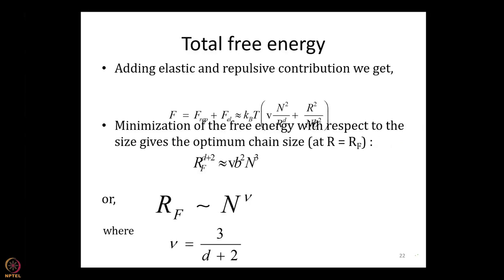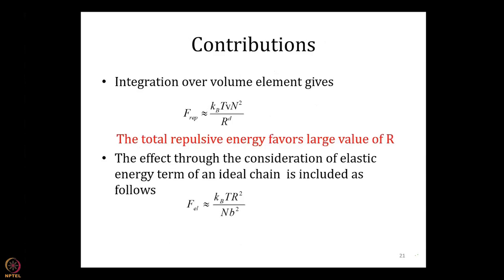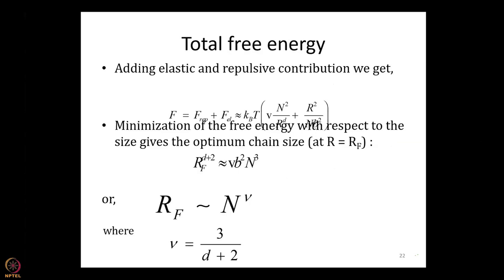When you add the two free energy terms — repulsion and elastic — I then minimize the total free energy with respect to R. Setting dA/dR equal to zero gives a beautiful result. The derivative produces terms with R to the power D plus one from the repulsive term and R from the elastic term on opposite sides.